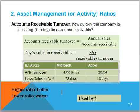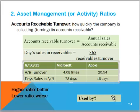For example, if the terms that they gave their customers were 30 days, 78 days in receivables would be very bad. What we can say is that Apple, with a turnover of 20 and only 18 days in receivables, has a faster and therefore better accounts receivable turnover than Microsoft. This ratio is used by management to determine whether they are being paid on time according to their credit terms, whether they need to work on collecting accounts, and to evaluate the performance of accounts receivable management.